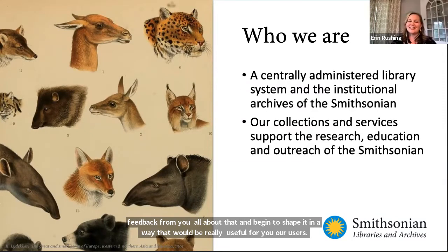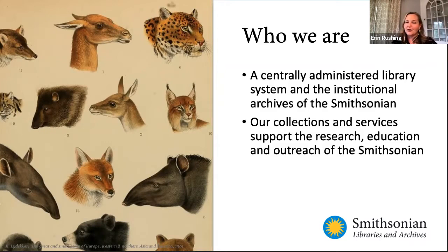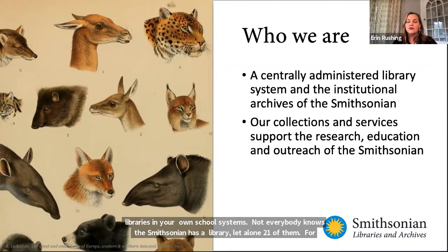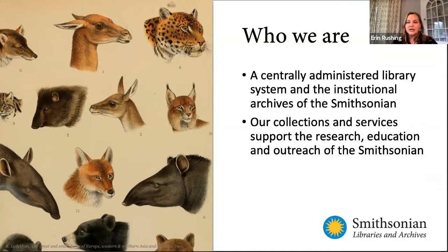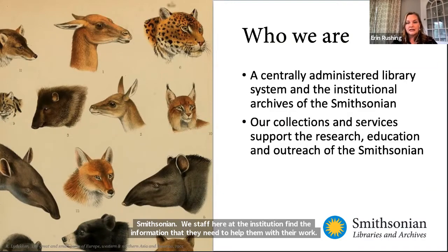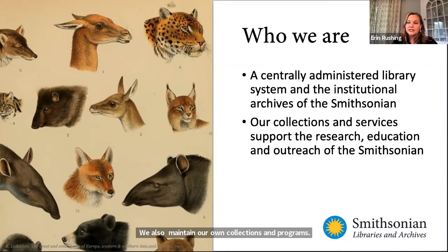For a little bit of context: I'm sure you're familiar with what a library does, but not everybody knows the Smithsonian has a library, let alone 21 of them. We're a centralized library system and an institutional archive responsible for a dynamic and multifaceted role within the Smithsonian. We help staff and researchers find the information they need, but we also maintain our own collections and programs. In the same way that the National Museum of Natural History has the Hope Diamond or the National Museum of American History has Dorothy's Ruby Slippers, our books and archival material are our collections and we strive to share them with the world.